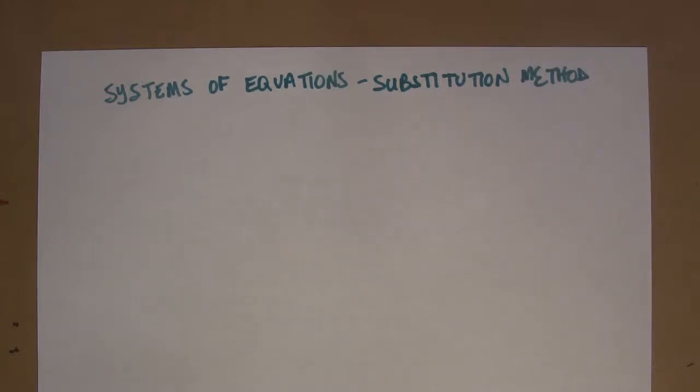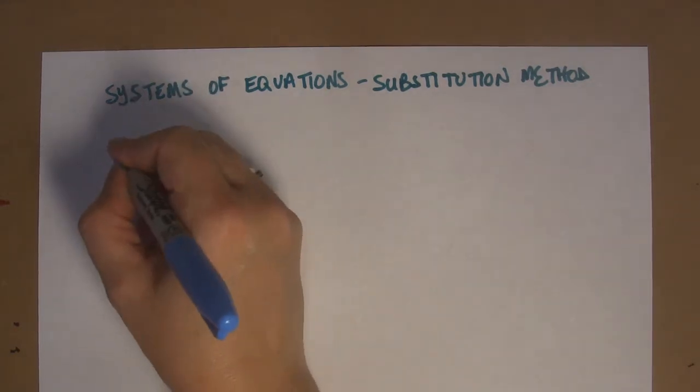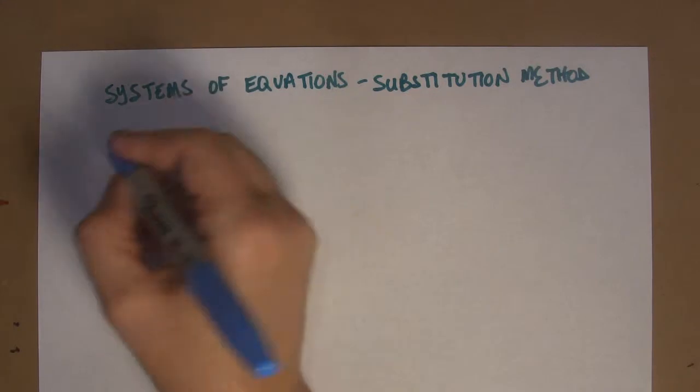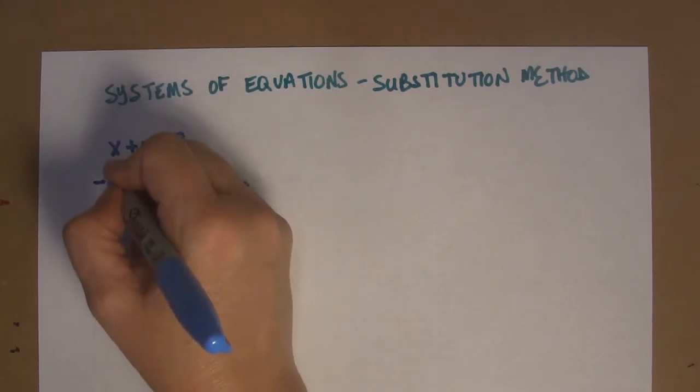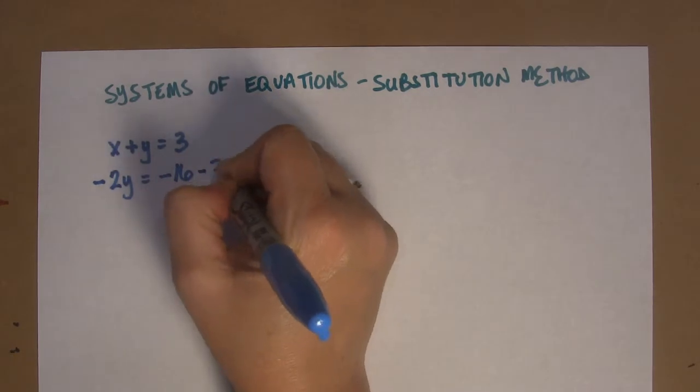Now we're going to learn a second way of solving systems of equations. Let's say you have these two formulas. You have x plus y equals 3, and you also have negative 2y equals negative 16 minus 3x.